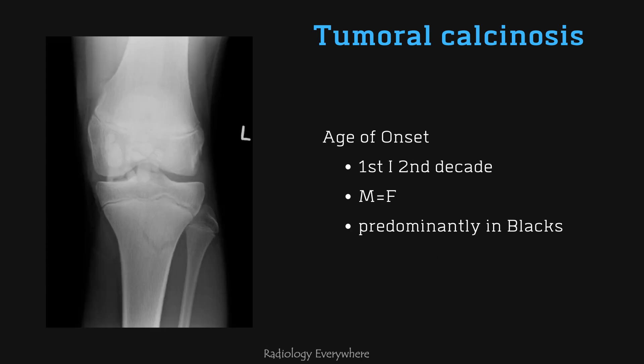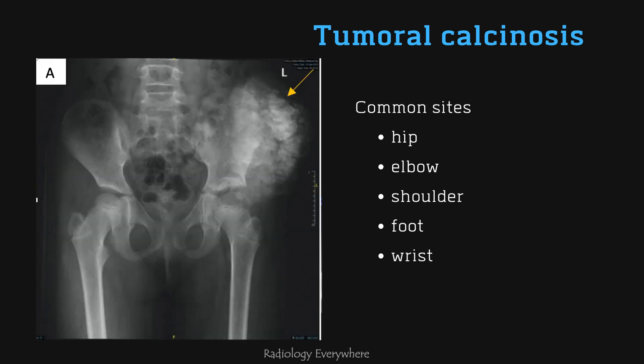When considering age, the onset is mostly within the first and second decades. The male to female ratio is equal and it is predominantly seen in blacks. The most common locations are the hip, elbow, shoulder, foot, and wrist.